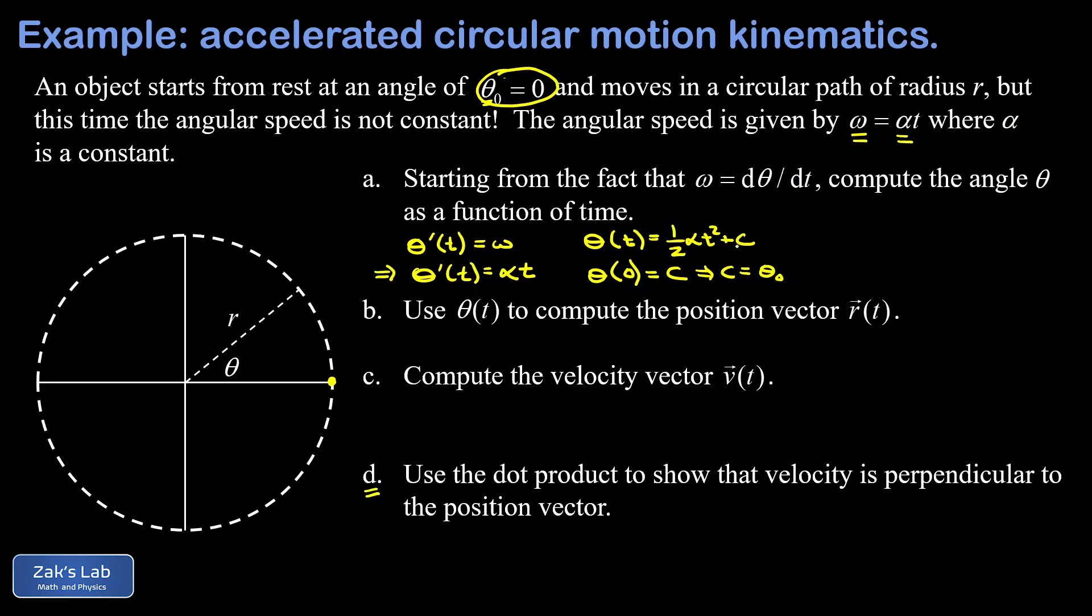That's what we would sub in for a more general problem here. But we were told our initial angle is zero, so we sub in theta equals zero. And we arrive at an equation for the angle as a function of time: one half alpha t squared.